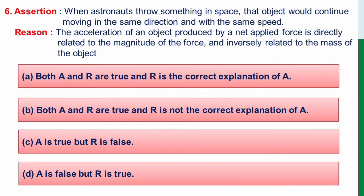Question number 6. When astronauts throw something in space, the object would continue moving in the same direction and with the same speed. And reason: the acceleration of an object produced by net applied force is directly related to the magnitude of force and inversely related to the mass of the object.